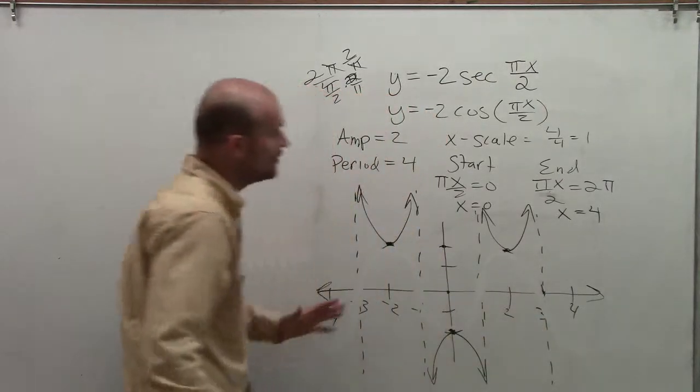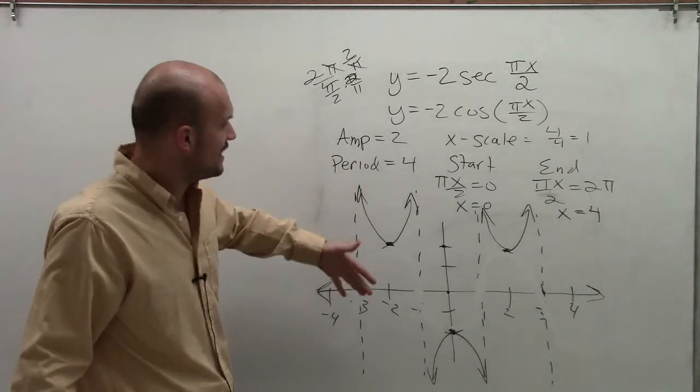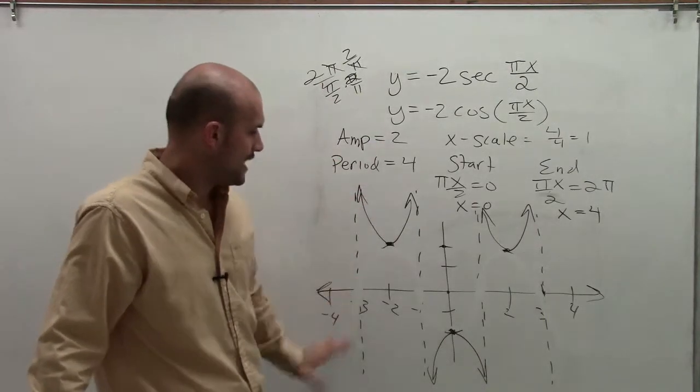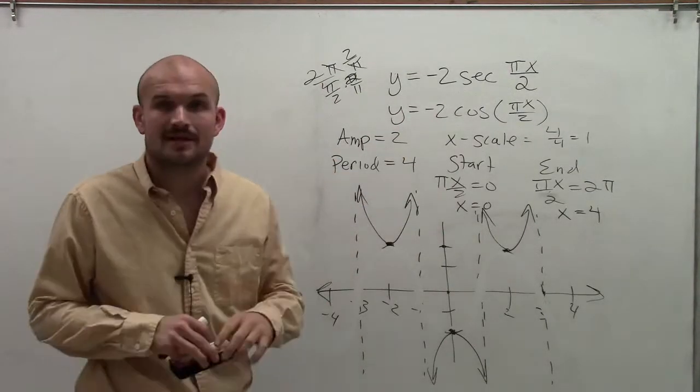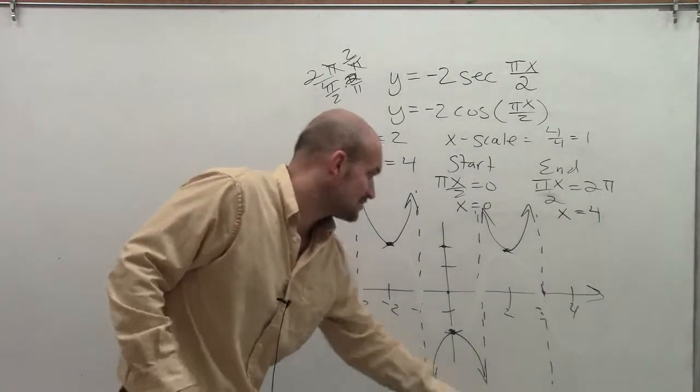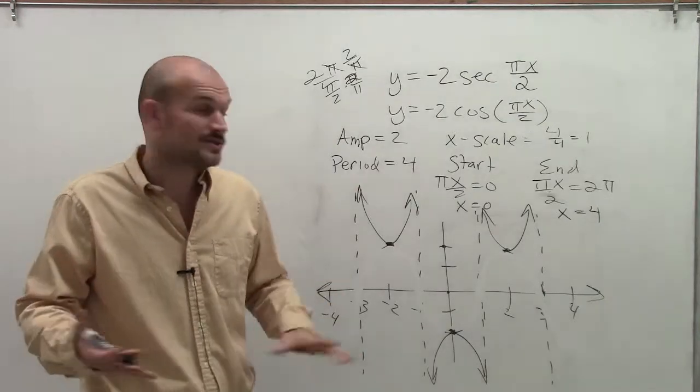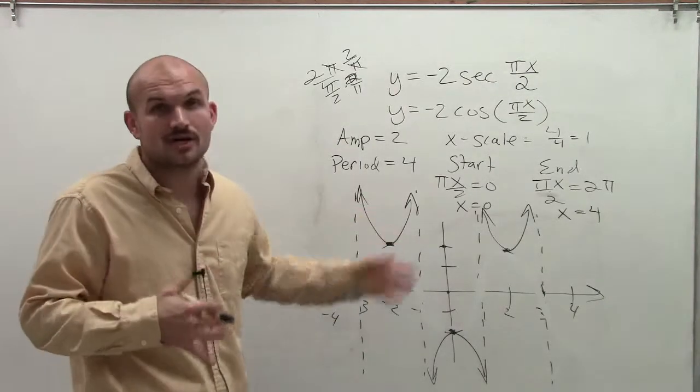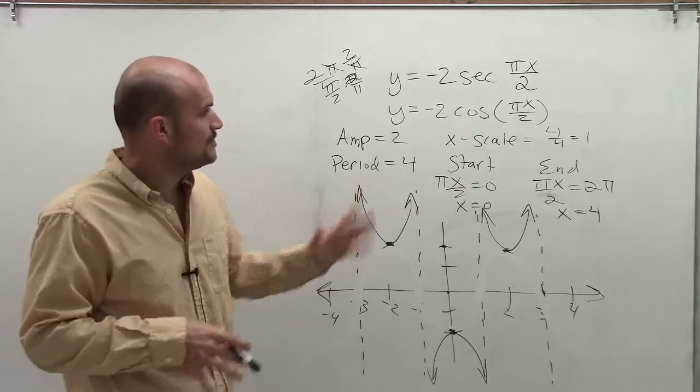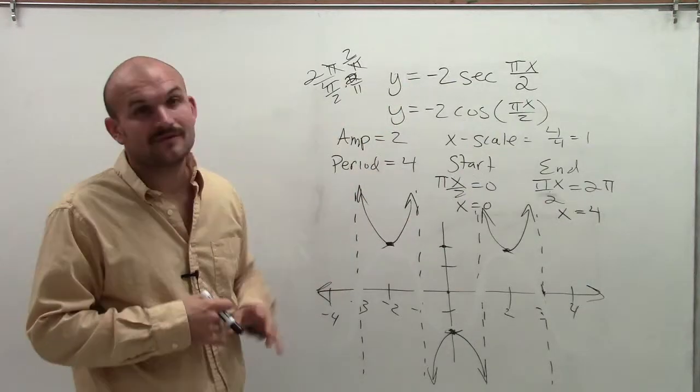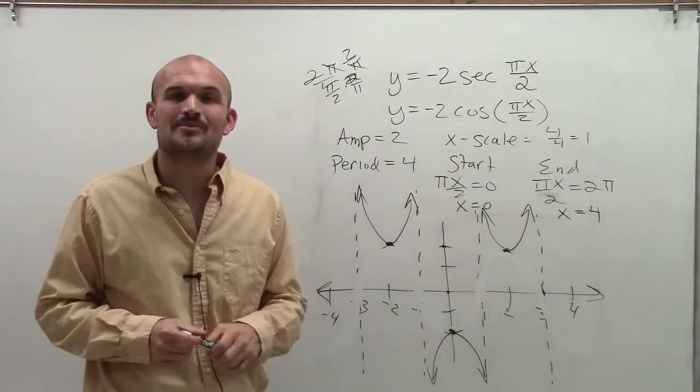However, you can notice that the x scale and all that kind of stuff is all going to help us be able to graph the secant graph. So there you go. You can obviously see there's a little bit of change as far as the period, as far as the changes like amplitude and range, and also domain. But you can see now how to graph the secant graph. So there you go. Hope you enjoyed. Thanks.